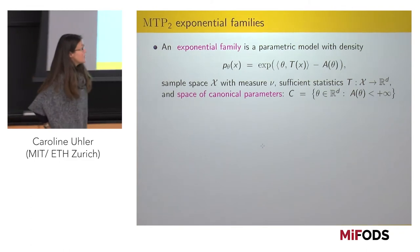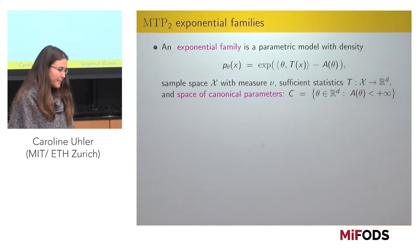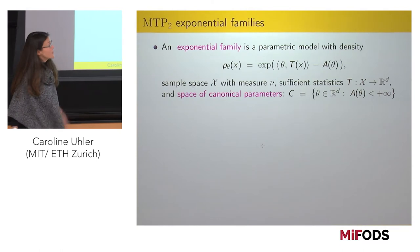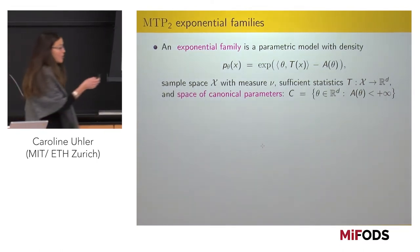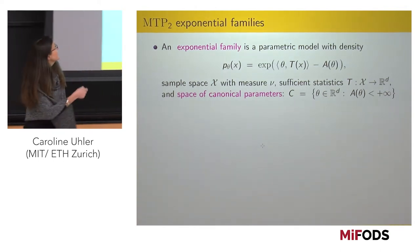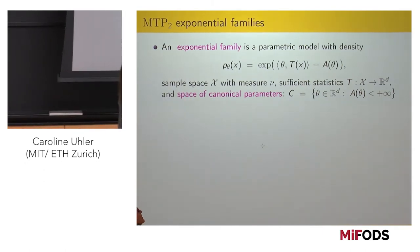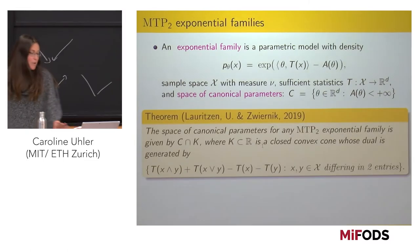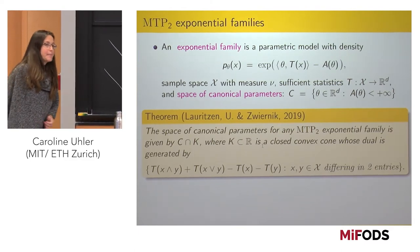Let me talk about exponential families. What does MTP2 mean for an exponential family, and does it buy us anything in terms of modeling? The convex space of canonical parameters will be C, and T stands for the sufficient statistics. For any exponential family, MTP2 is always a convex constraint.